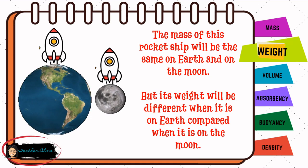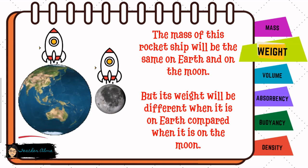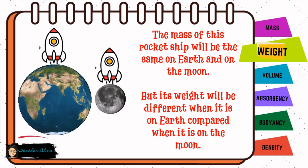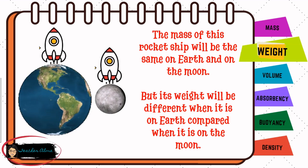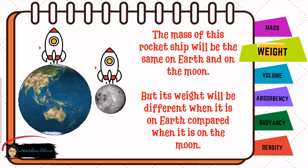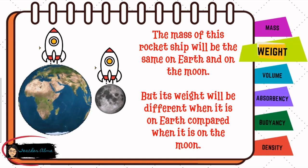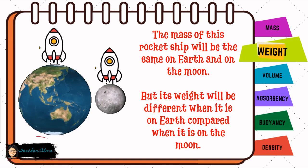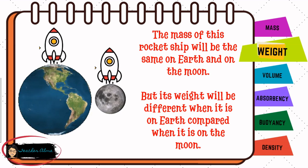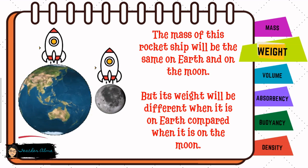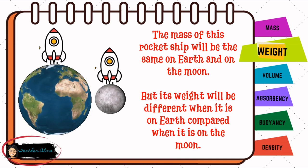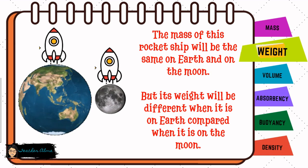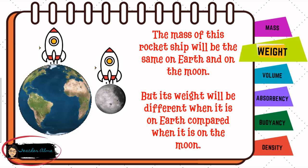But its weight will be different when it is on Earth compared when it is on the Moon. The weight of the rocket ship is a different story. The weight of an object depends on its location. The rocket ship has the same mass on Earth and on the Moon, but its weight will change since the Moon's gravity is weaker than the Earth. In fact, the Moon only has one-sixth the gravity that Earth has. This means that the rocket ship will weigh six times less on the Moon than when it is on Earth.